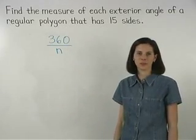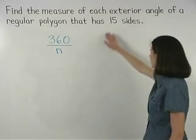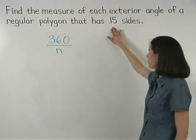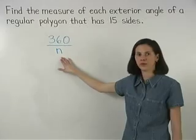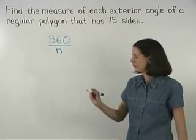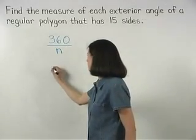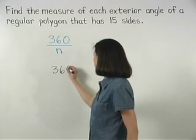In this problem, since the polygon has 15 sides, we simply plug a 15 in for n. And we have 360 over 15.